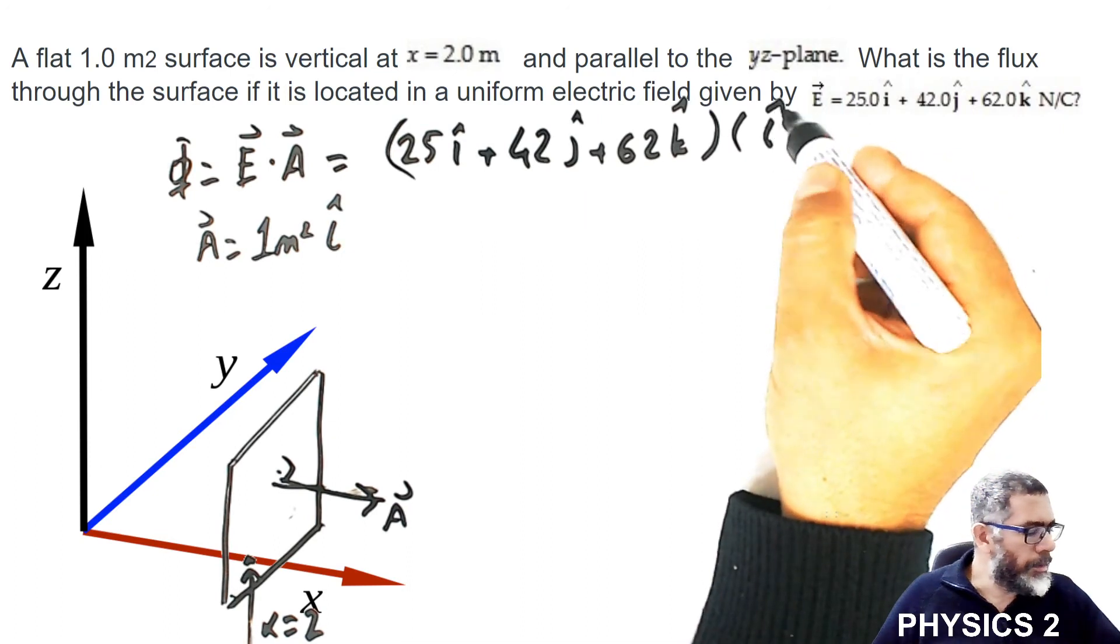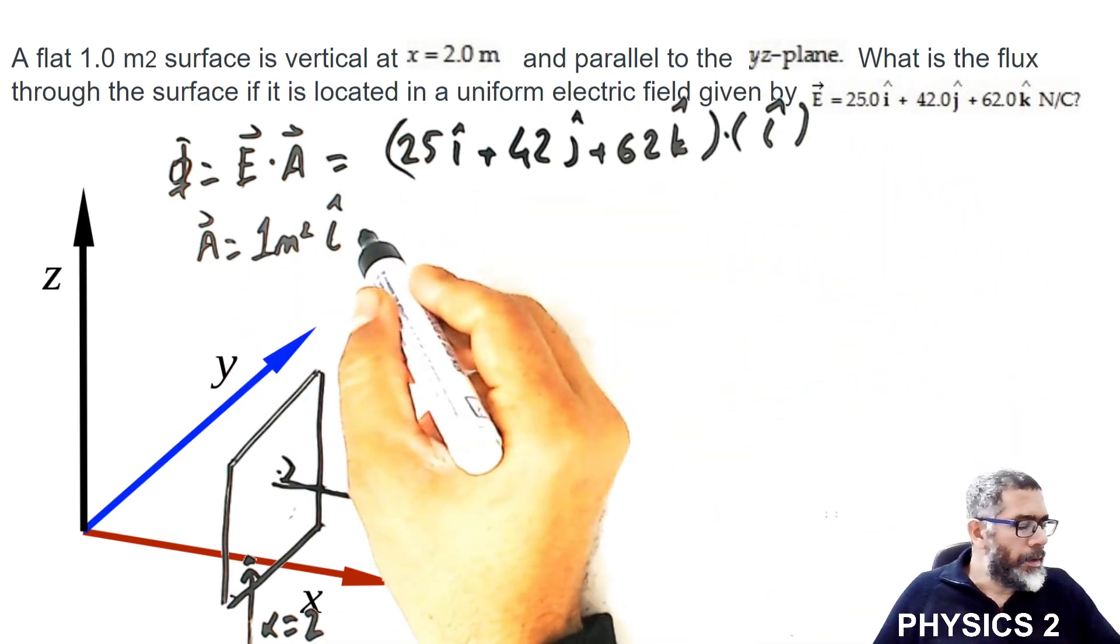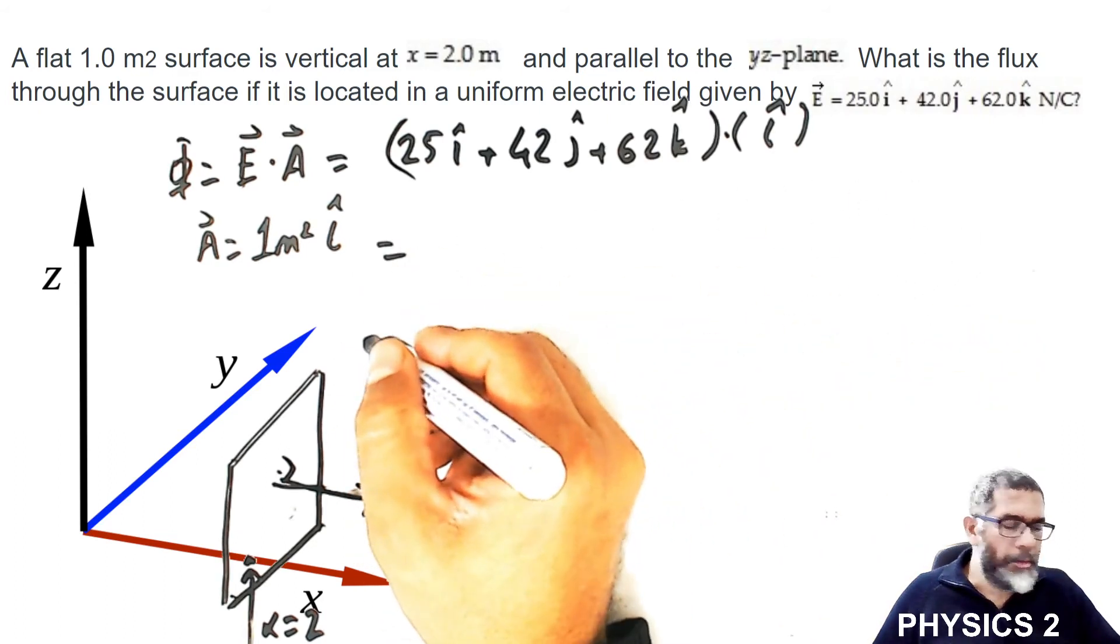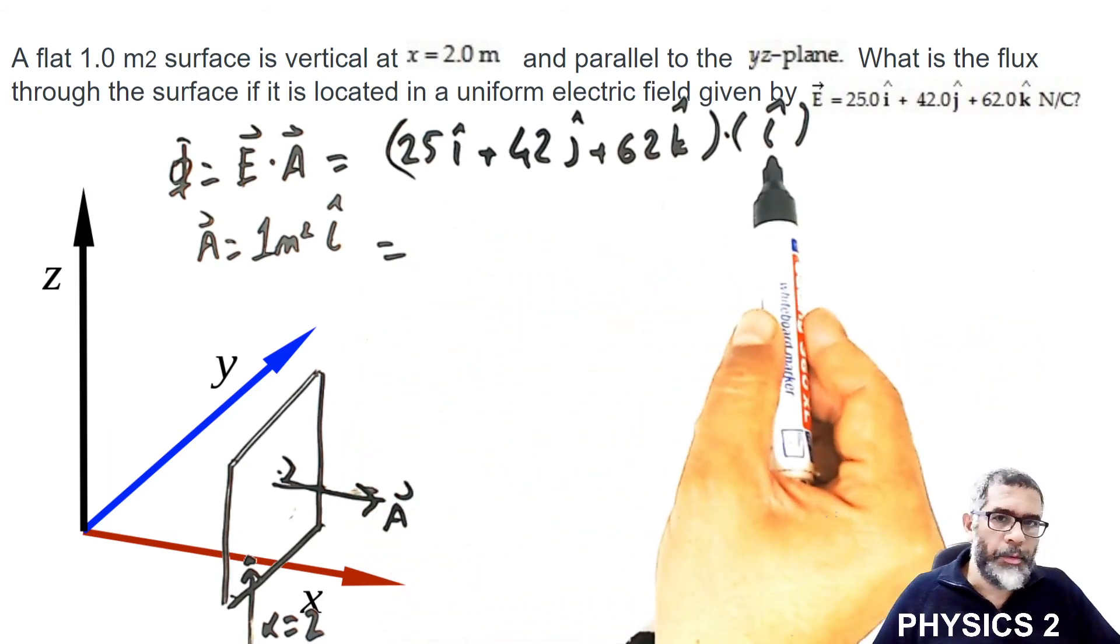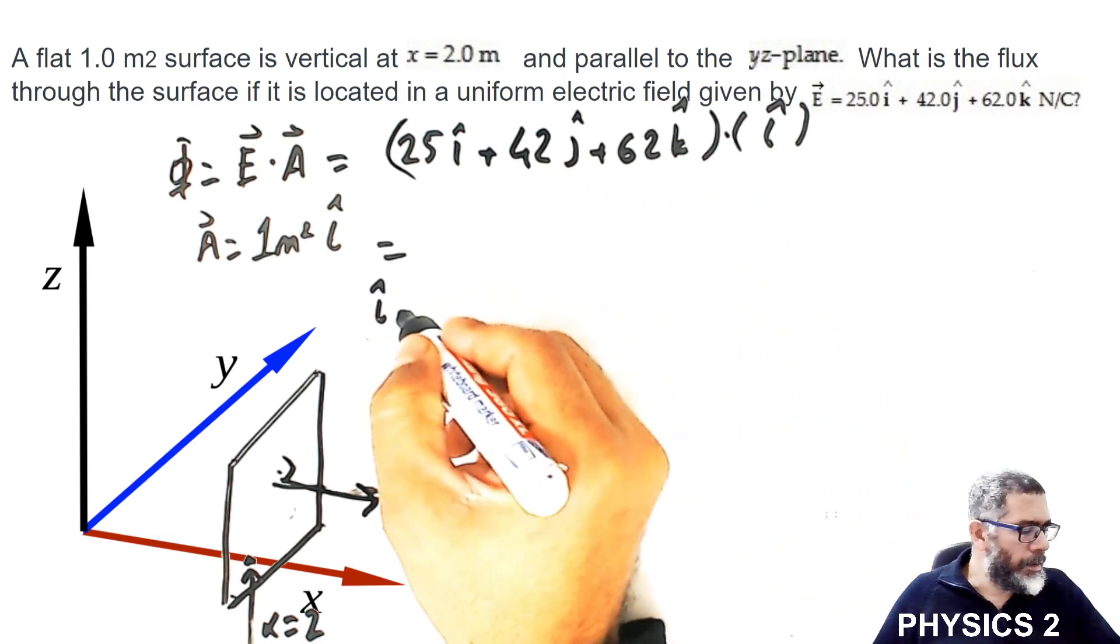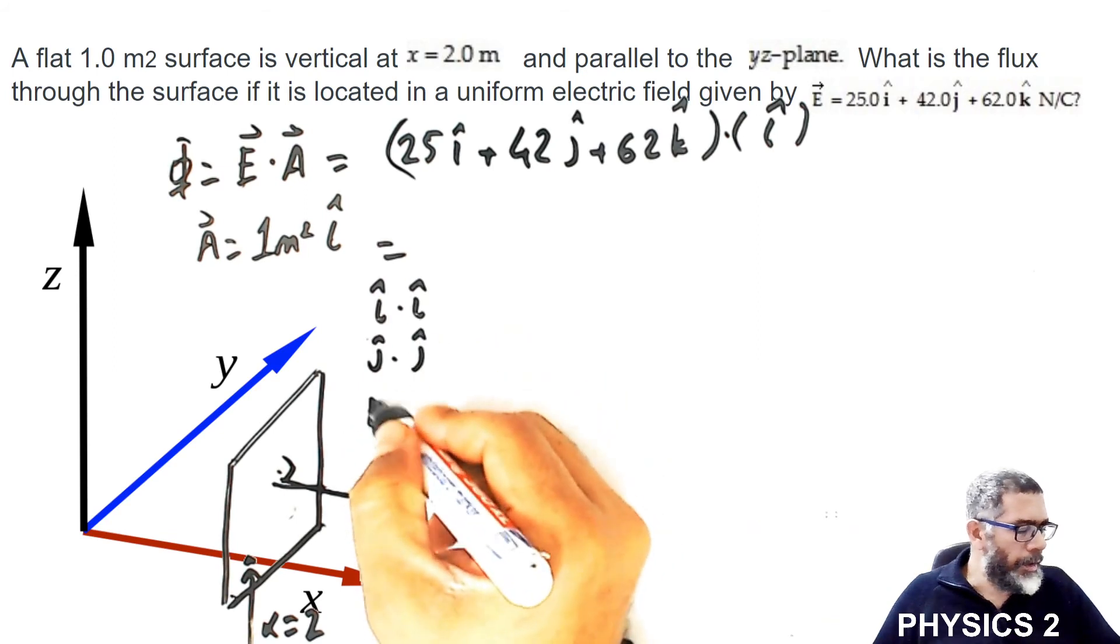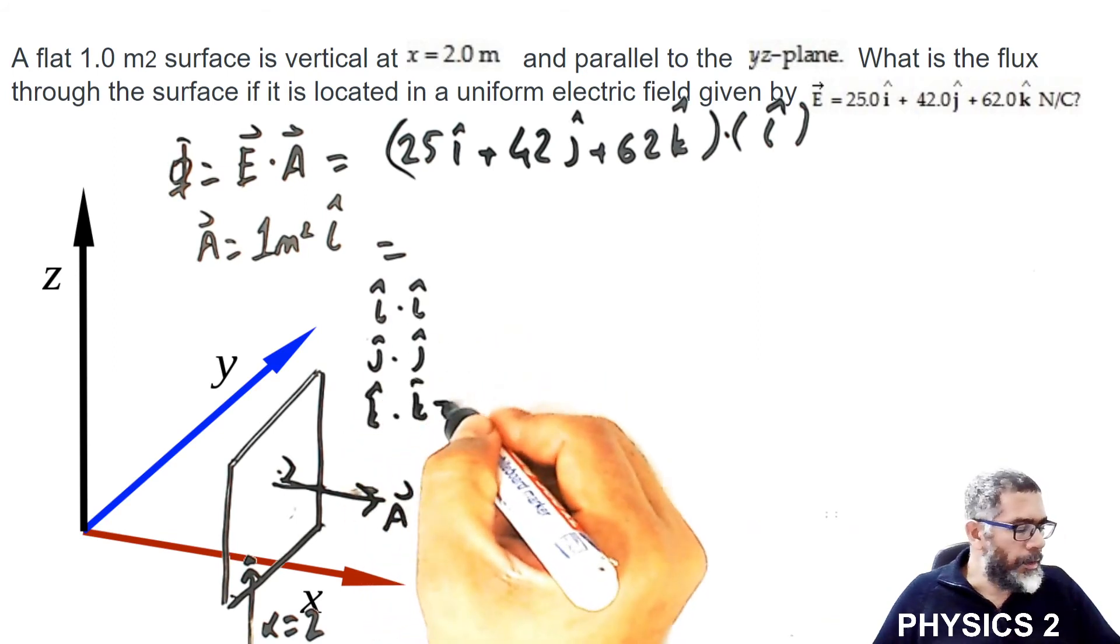25i plus 42j plus 62k, and this is going to be dot product with i, which is the area. We are going to operate this dot product between unit vectors.